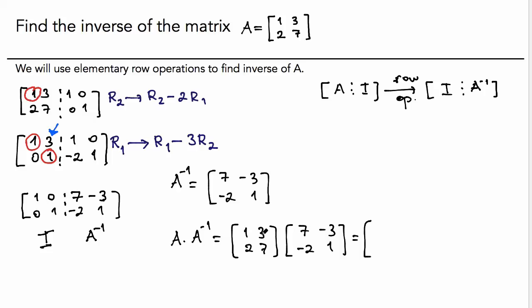Let's multiply them. One times seven is seven. Three times negative two is negative six. Their sum is one. One times negative three is negative three. Three times one is three. Their sum is zero. Fourteen minus 14 becomes zero. And negative six plus seven is one. So, this is good. This means this A inverse that we found is really the inverse of A.